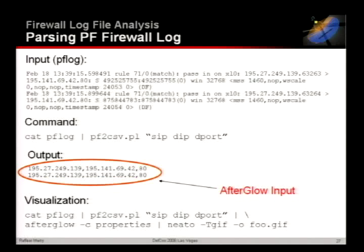Putting it all together: you cat the log file, pipe through PF to CSV with the fields you want, pipe into Afterglow with a property file, then pipe into GraphViz. GraphViz provides four tools with different layout algorithms: DOT uses hierarchical layout; NEATO does organic layouting placing nodes optimally with minimal overlaps; Circo uses a circular approach, moving nodes outward into concentric circles; and 2PI uses some other algorithm — if you get stuck with the others, try 2PI.